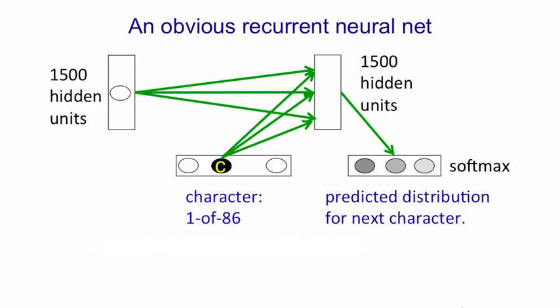And we train the whole system by backpropagating from that softmax the log probability of getting the correct character. We backpropagate that through the hidden to output connections, back through the hidden to character connections, and then back through the hidden to hidden connections, and so on all the way back till the beginning of the string.